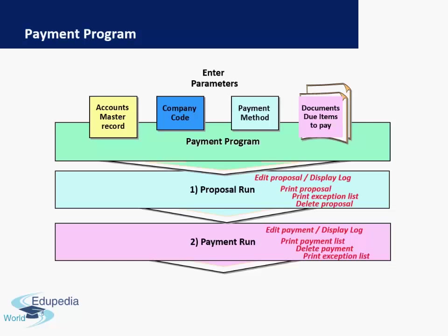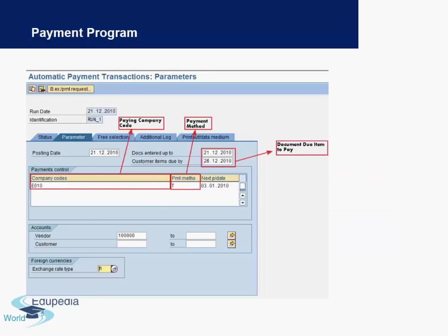This is how a payment program works in a nutshell — we will cover this in detail in a demo at the end of the presentation. On the parameter screen, the most important parameters are the company code, the payment method, the vendor number, and you can enter dates like the documents entered up to or items due by. The next payment date is also very important, as this is how the system understands when the next payment will be made and automatically selects documents due before that date. The next tab, called 'Free Selection,' gives you the option of entering any specific documents you need to pay.